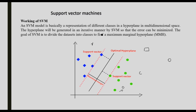The hyperplane will be generated in an iterative manner by SVM so that the error can be minimized. SVM's goal is to divide the dataset into classes to find a maximum marginal hyperplane. Finding one maximum marginal hyperplane is SVM's aim.